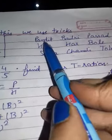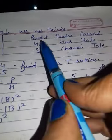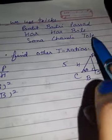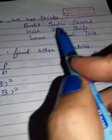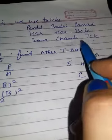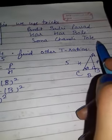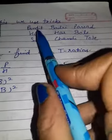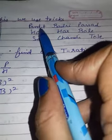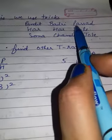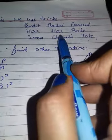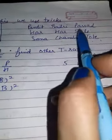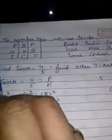Now I will tell you how to remember them — it is very easy. Use this trick: 'Pandit Badri Prasad Har Har Bole Sona Chandi Tole.' P is working as Pandit, B is Badri, P is Prasad, H is Har, H is Har, B is Bole. I will take the first letter of each word.